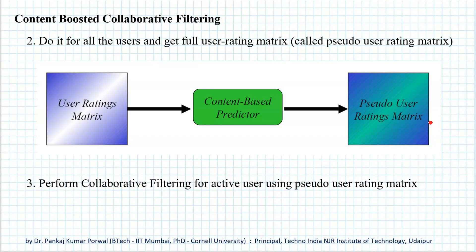We do this for all users, and using that we get a full pseudo user rating matrix. Once we have the pseudo user rating matrix, we can select any user as our active user and perform collaborative filtering, using the pseudo user rating matrix to find similarities between the active user and other users, and obtain a collaborative filtering based predictor. Such predictions are called content-boosted collaborative filtering.